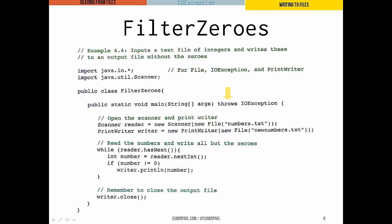Another quick example: FilterZeros. We're bringing in java.io.* and Scanner. This program takes as input a file of integers and writes those integers to an output file, except it filters out any zeros. We have our main method — again, throws IOException because we're reading and writing files. First, we open our reader and writer: numbers.txt and newNumbers.txt. As long as there is a next line to read in our input file, we read the next int, store it in number, and if number is not equal to zero, we write it out using our writer object on its own line with println. Finally, at the end, we have to remember to close our writer.